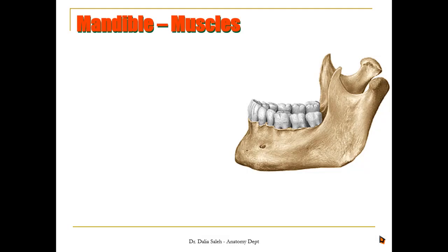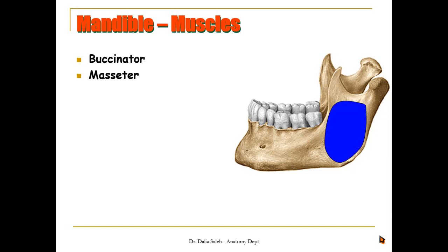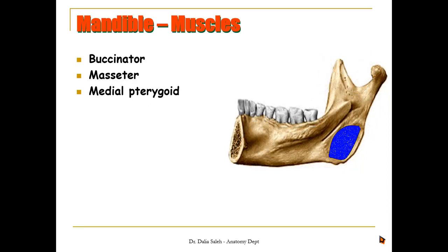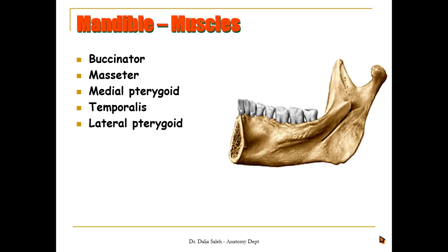For the muscles attached to the mandible, we have the buccinator, one of the muscles of the face. We also have the insertion of the four muscles of mastication: the masseter on the outer surface of the ramus of the mandible; the medial pterygoid on the inner aspect of the ramus at the angle; the temporalis muscle to the coronoid process; and the lateral pterygoid muscle to a pterygoid fovea — a depression on the front of the condyloid process of the mandible.